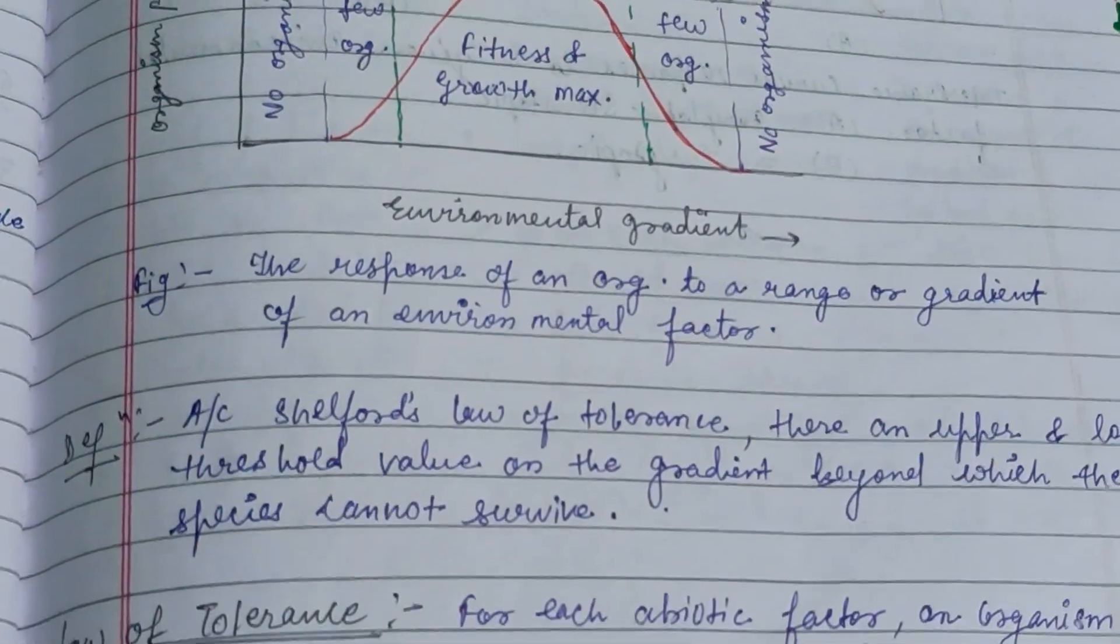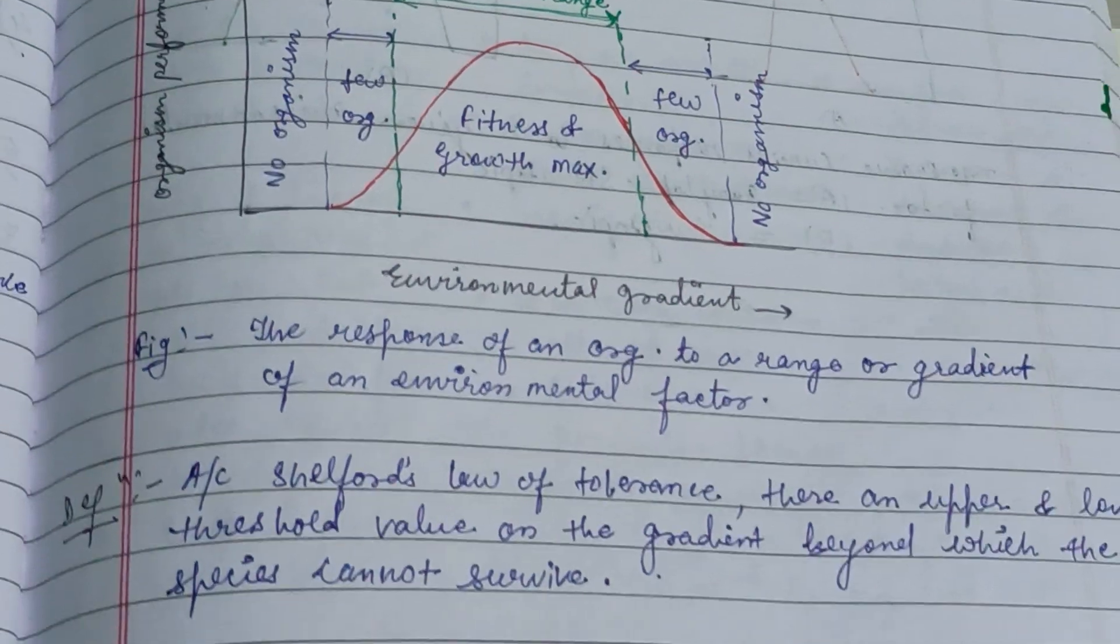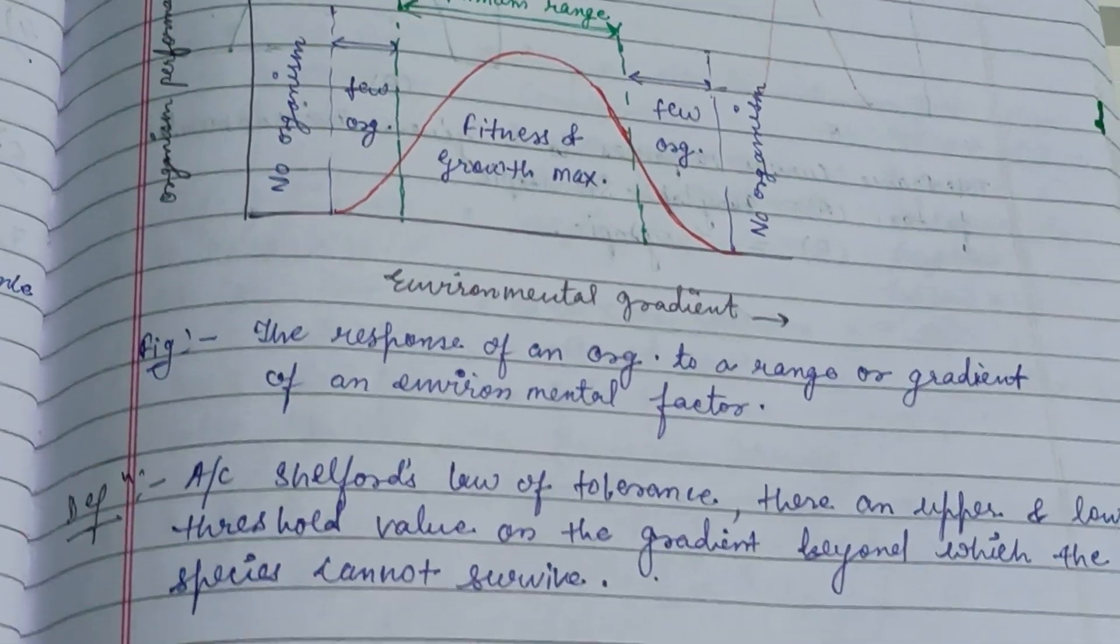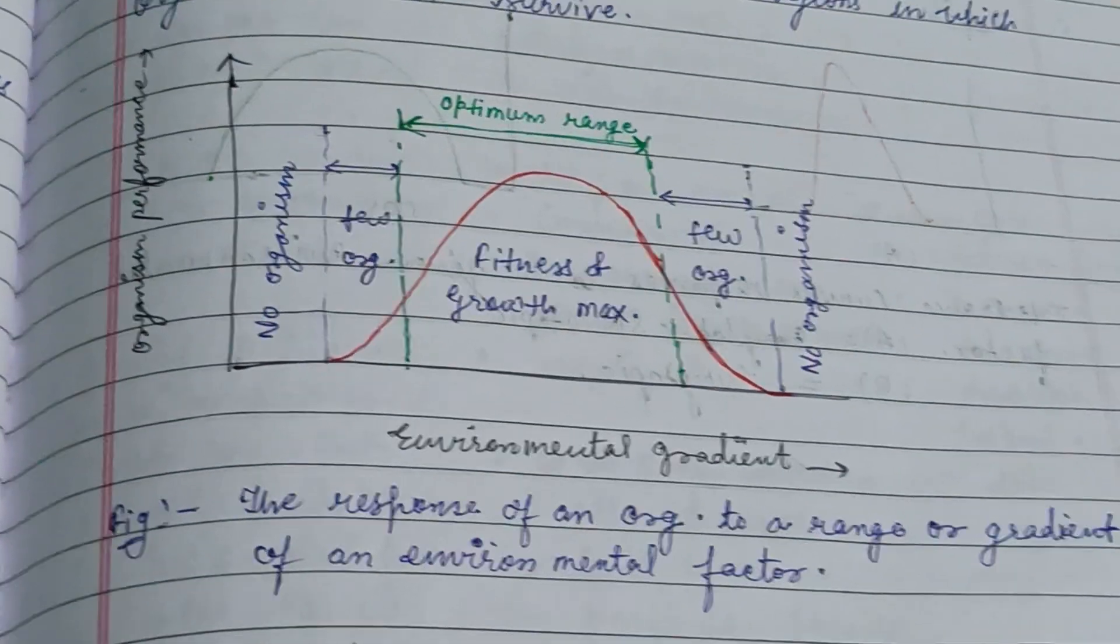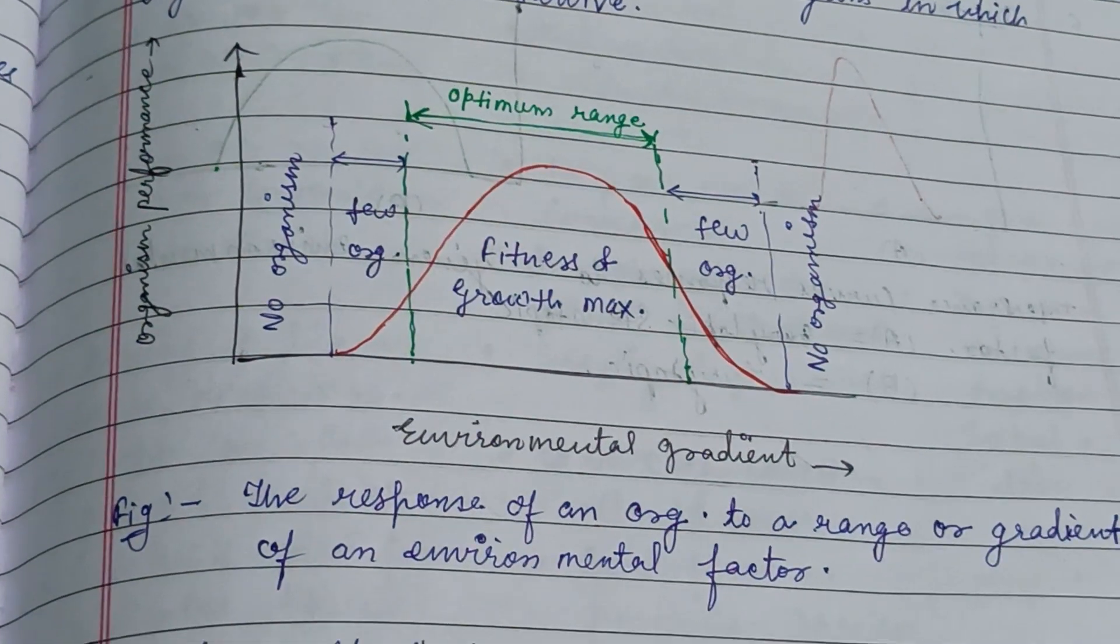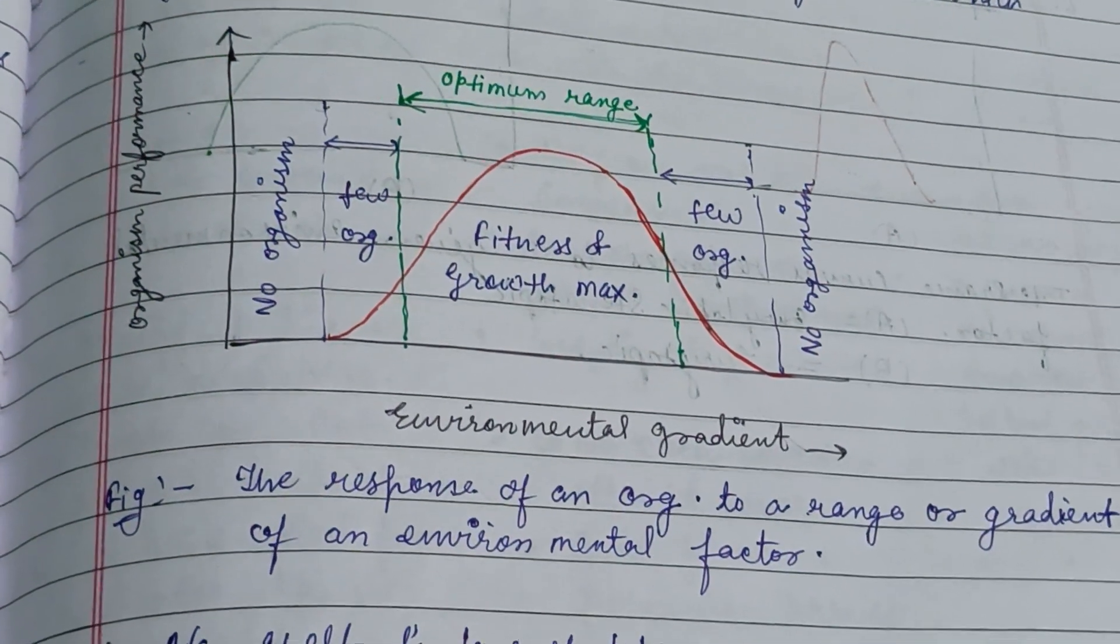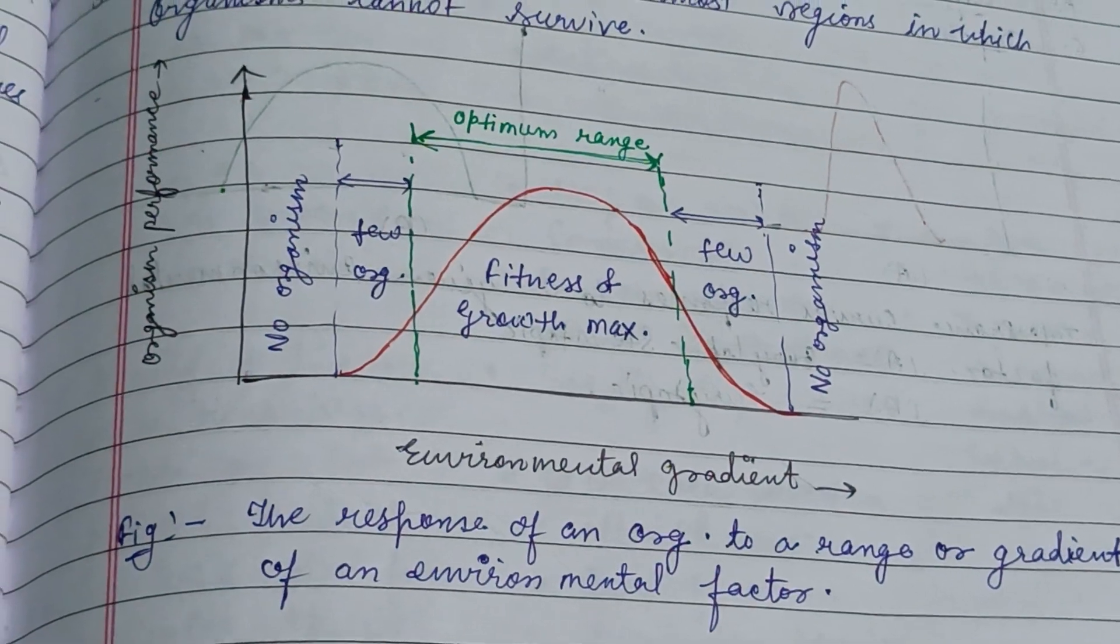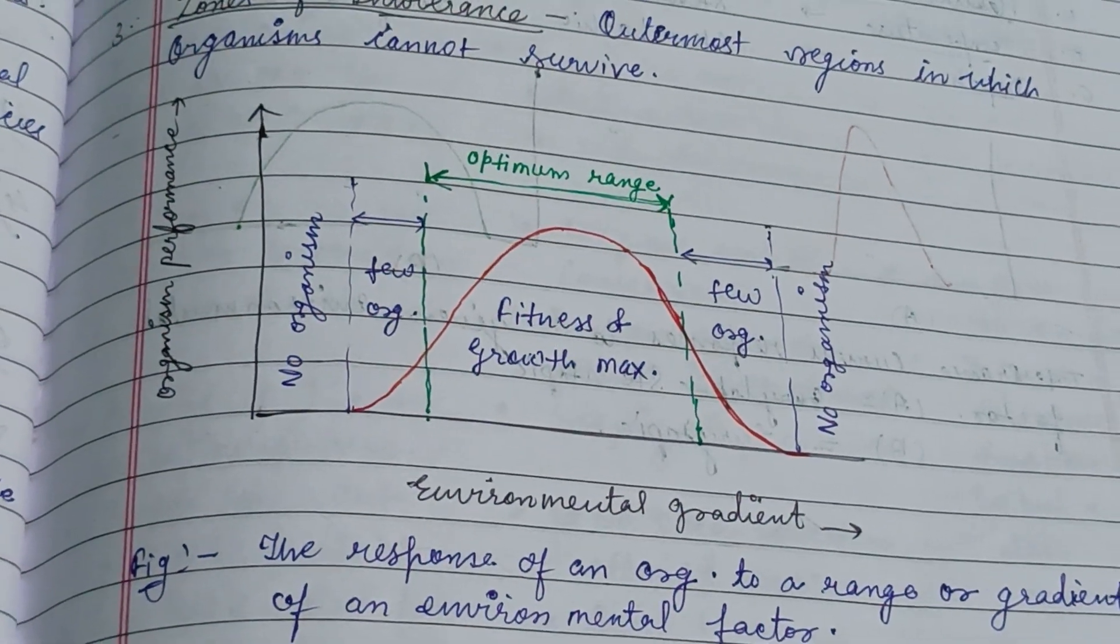This describes the response of an organism to a range or gradient of an environmental factor. This figure depicts the range of the optimal zone, the zone of stress, and the place where no organism survives, which is the zone of intolerance.